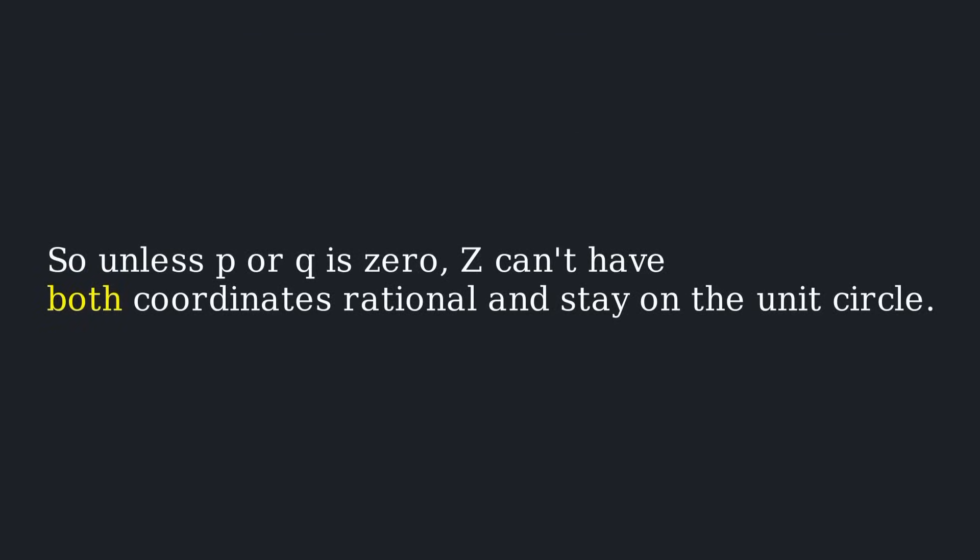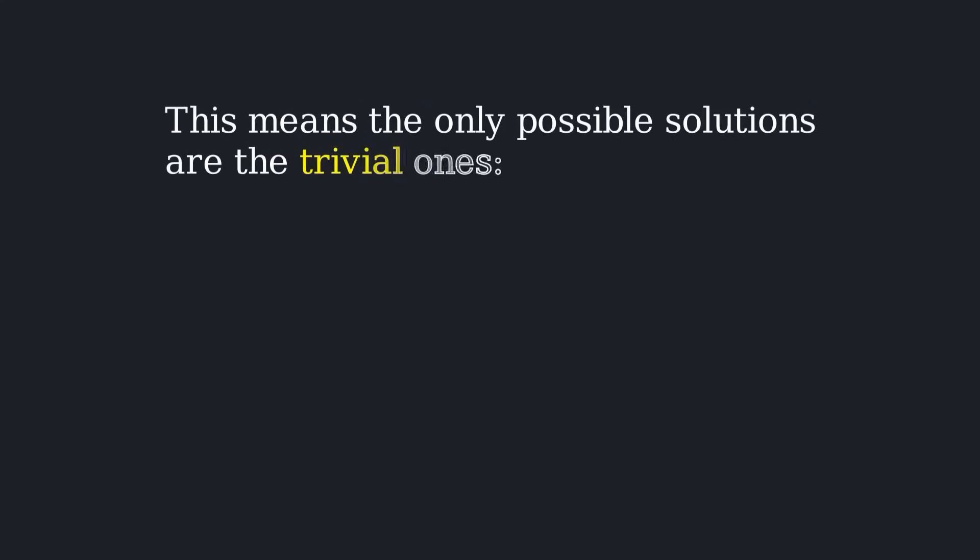So unless p or q is 0, z can't have both coordinates rational and stay on the unit circle. This means the only possible solutions are the trivial ones: p equals 1 and q equals 0, or vice versa.